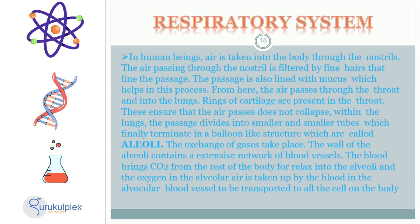Air enters the human body through the nostrils, which have fine hairs that filter the air and mucus to aid in the process. The air then passes through the throat, which has rings of cartilage to keep the passage open, and enters the lungs. The passage divides into smaller and smaller tubes, eventually leading to the alveoli, which are balloon-like structures. Gas exchange takes place here, with carbon dioxide being released from the body and oxygen taken up by the blood vessels in the alveoli walls. This oxygen is then distributed throughout the body to all the cells.